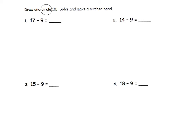Grade 1, Module 2, Lesson 14, Exit Ticket. The objective is to model subtraction of 9 from teen numbers.